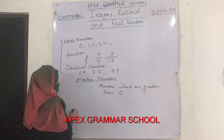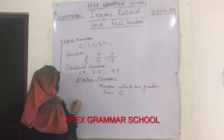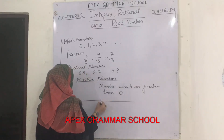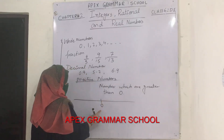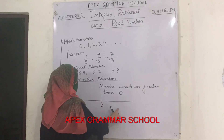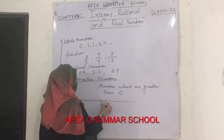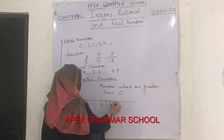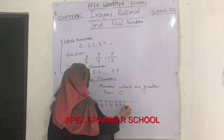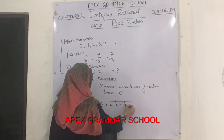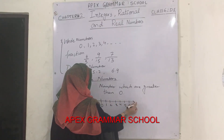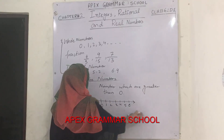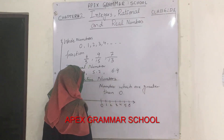To understand this concept more easily, you need to look at this number line. At the center of the line there is 0. Towards the right there are whole numbers or positive numbers: 1, 2, 3, 4, 5, 6 and so on. This arrow shows that the line is continuous towards the right direction.